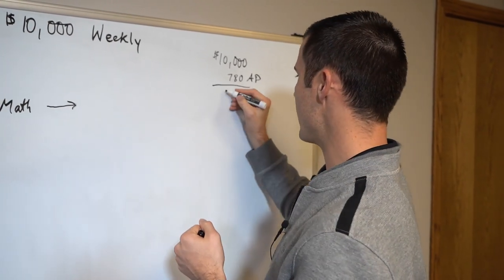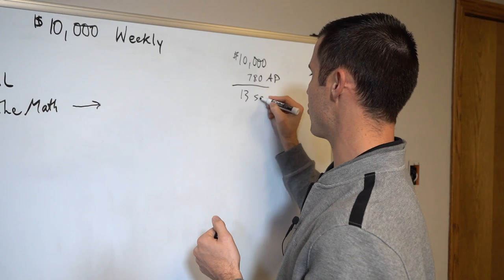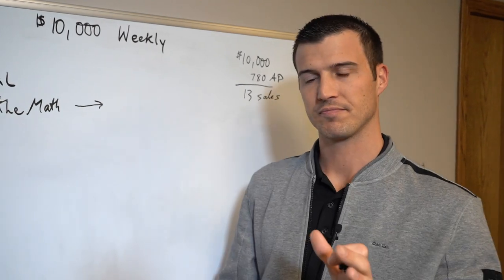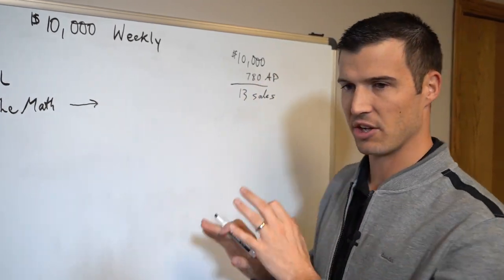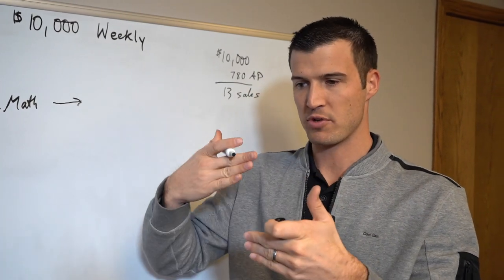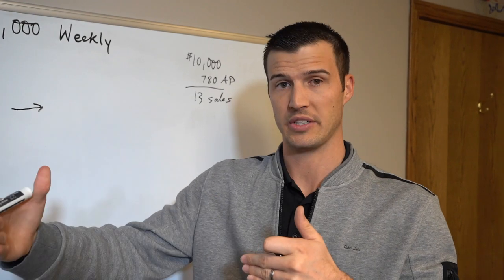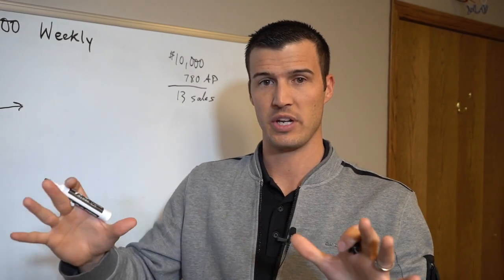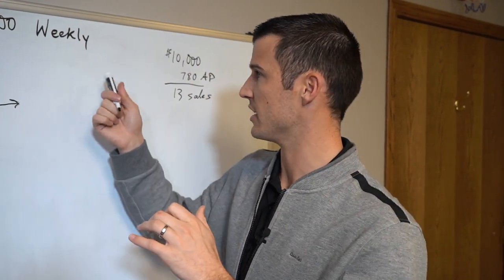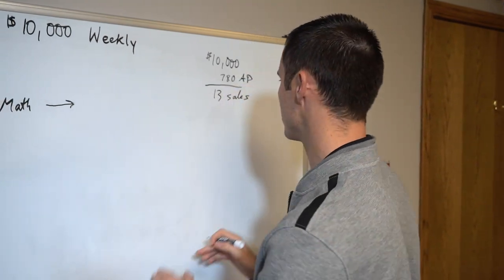When you divide that out you're close to about 13 sales. So 13 sales every single week, that's what you got to do every single week, you have to write 13 sales. You can do that for 50 weeks, 13 sales and guess what, you just made half a million bucks.